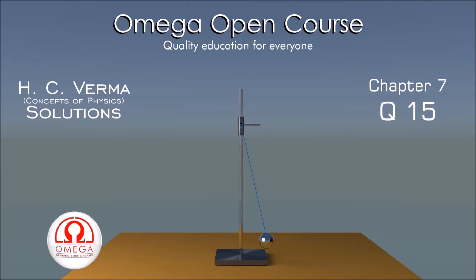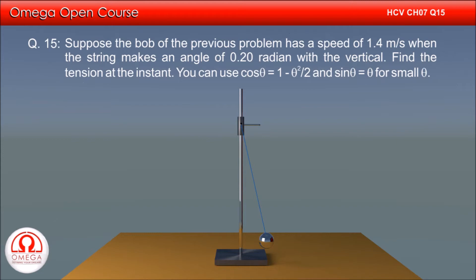H.C. Verma Chapter 7 Question No. 15: Suppose the bob of the previous problem has a speed of 1.4 m per second when the string makes an angle 0.2 radian with the vertical. Find the tension at the instant.